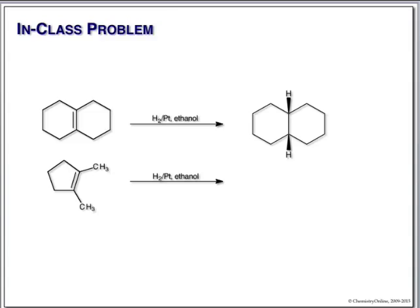These are so simple you can just do them as quickly as you can write them. We need to show that both hydrogens come on from the same face — they can either be up or down, it doesn't matter, but we must show cis stereochemistry. For the compound with two methyl groups, we will add hydrogen from one side only, and we must show this with wedge bonds — both hydrogens on the same side of the ring plane.